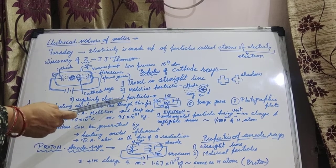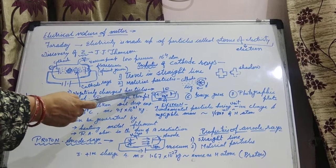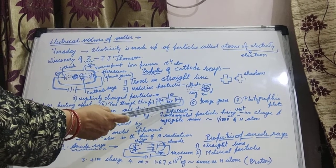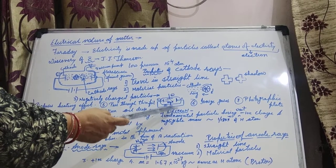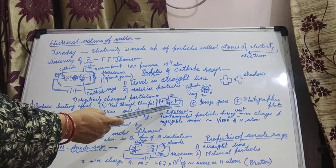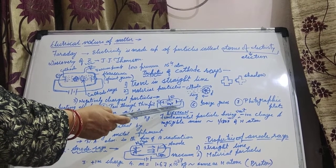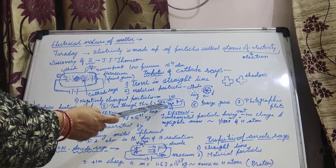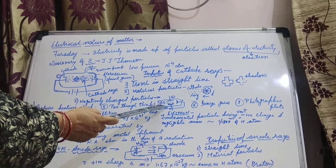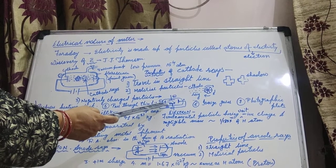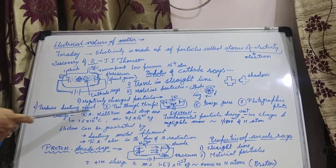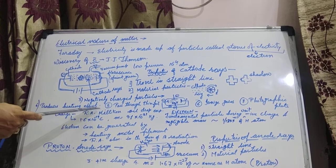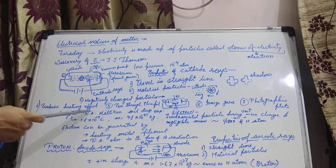Cathode rays are having negative charge on them — they are made up of negatively charged particles. If we provide an electrical field across this discharge tube, it is observed that cathode rays get deflected towards the positive field. If the rays are bending towards the positive field, definitely they are carrying negative charge. This proves that cathode rays are bearing negative charge. The next property is that cathode rays produce heating effect — when they strike any surface, that surface becomes hot.